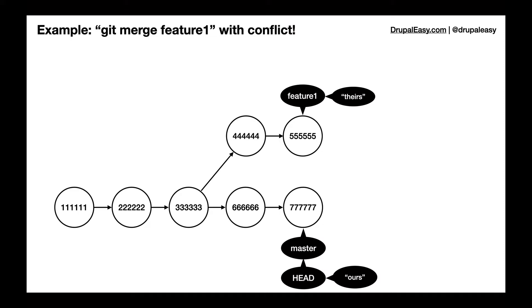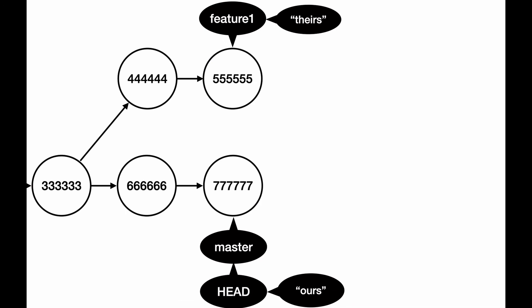So in this example, we're going to be merging the feature one branch into the master branch and we're going to hit a conflict and let's just talk about what that conflict looks like and how we can resolve that. So the first step is we're going to kick off our merge. You can see HEAD is pointing at the master branch on commit 777 and we're merging in the feature one branch.